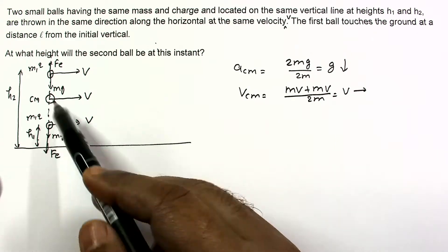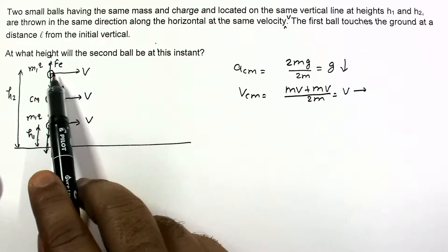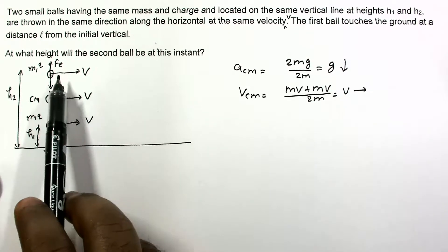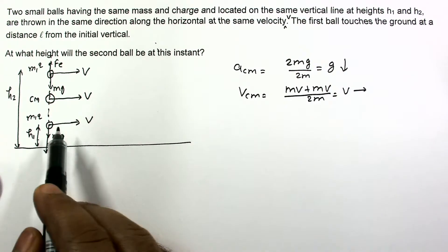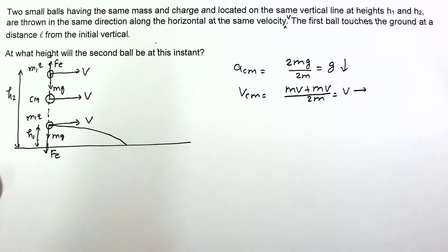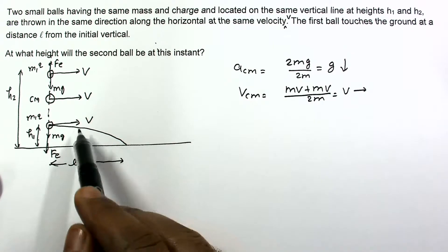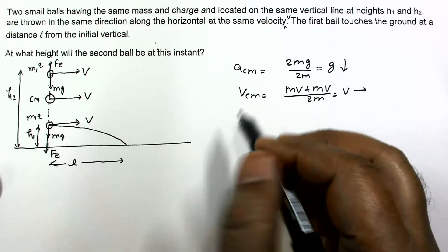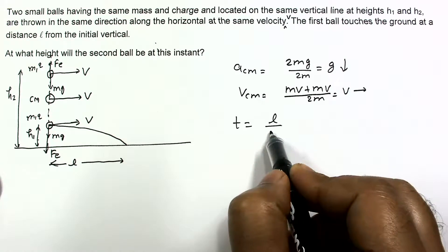Since the forces between the two balls are vertical, the horizontal displacement of both balls at any time will be equal, and v remains constant for both balls. The first ball touches the ground at horizontal distance l, so the time taken by the ball to reach the ground is simply t = l/v.